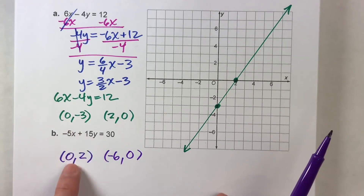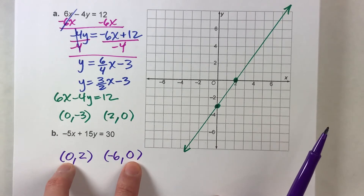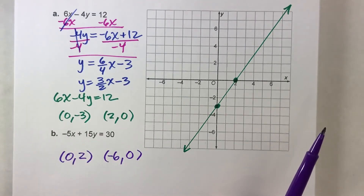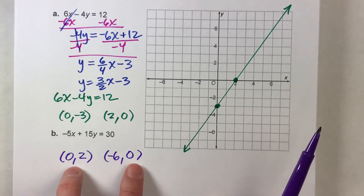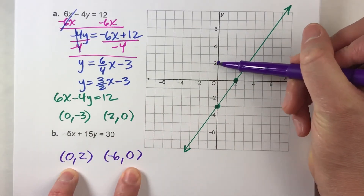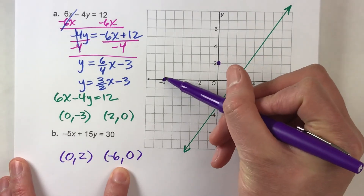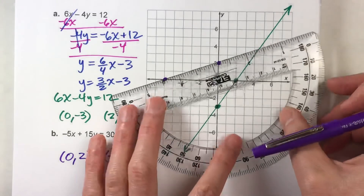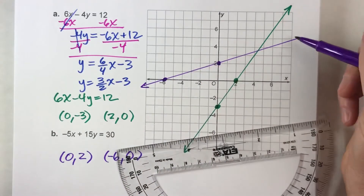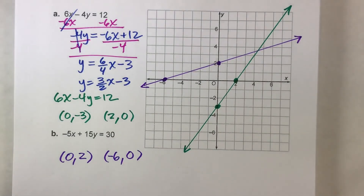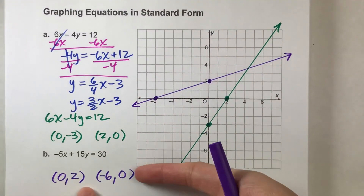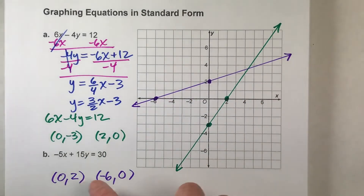I always pick 0 for x and then 0 for y because those are the easiest numbers to work with — it completely eliminates one variable from the equation, making it easy to find the other one. Technically you could pick any number, but putting in 0 makes this a lot easier. So let's plot these: (0, 2) is right here, and (−6, 0) is right here. When I draw the line through those two points, I get my second graph. Graphing equations in standard form can be that quick — just find two intercepts, plot them, and draw a line.